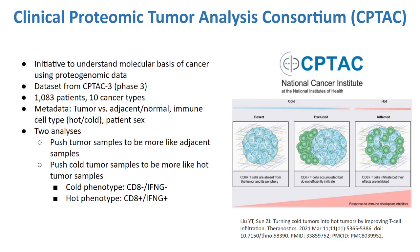I'll talk about the dataset that I processed and analyzed with my website. This comes from the Clinical Proteomic Tumor Analysis Consortium. CPTAC analyzes proteomic and genomic profiling data in an initiative to better understand the molecular basis of cancers. The dataset used in Cell Shooter is from phase three of CPTAC — an RNA-seq dataset of tissue samples from 1,083 patients and 10 cancer types. Both tumor samples and adjacent or normal samples were taken from the patients, and the immune cell type associated with each sample was also recorded. With these data and metadata, we can use Cell Shooter to find small molecules or drugs that can potentially alter gene expression signatures of a selected cluster of samples to be more like those of another cluster — for example, pushing tumor samples to be more like adjacent samples, or pushing cold tumor samples to be more like hot tumor samples.